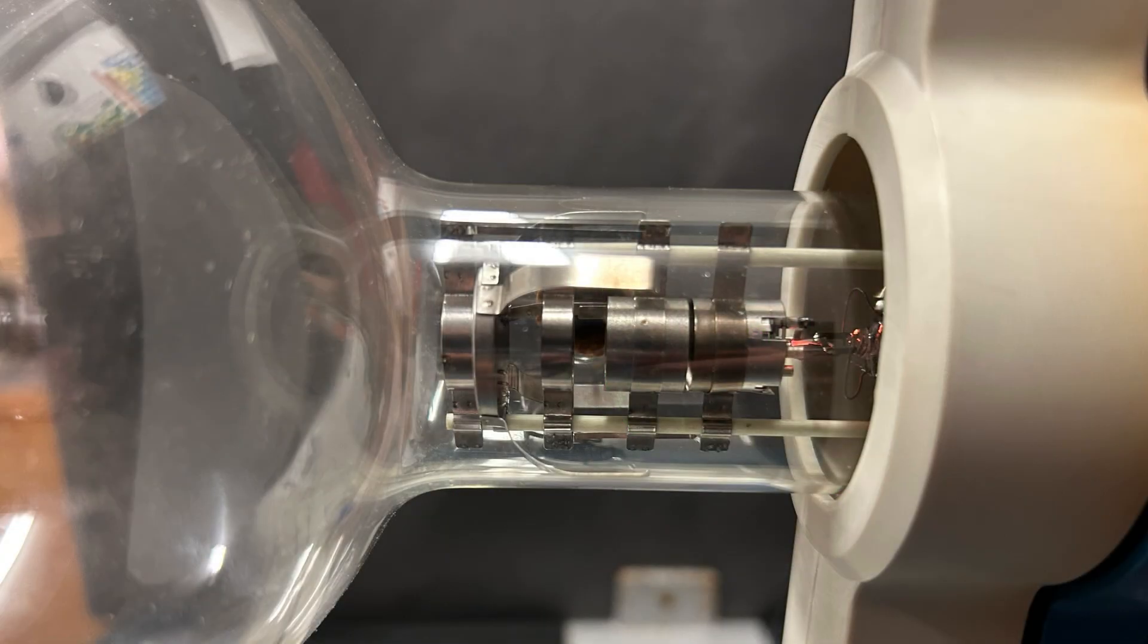The back of the evacuated tube is a filament which is heated and gives out electrons by thermionic emission. Here you can see it glowing an orangey-red colour.